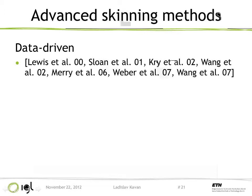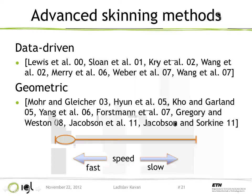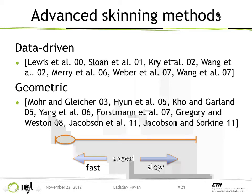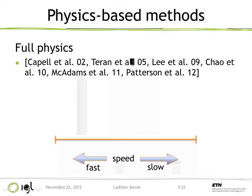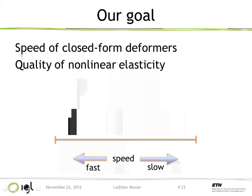There has been quite a bit of research on advanced skinning methods, which I broadly categorize into several groups. Both data-driven and geometric methods are very fast, but sometimes they require a fair amount of user input to get nice effects. Physics-based methods, on the other hand, give us many nice effects almost for free — for example contact, collisions, and dynamics — without too much manual labor, but at the cost of compute time. One possibility to speed this up is to simulate only in a low-dimensional subspace, an approach called reduced-order physics. This is much faster than full physics but still more expensive than simple closed-form skinning. What we are aiming for is basically to replicate the speed of closed-form deformers without compromising much of the quality of non-linear elasticity.